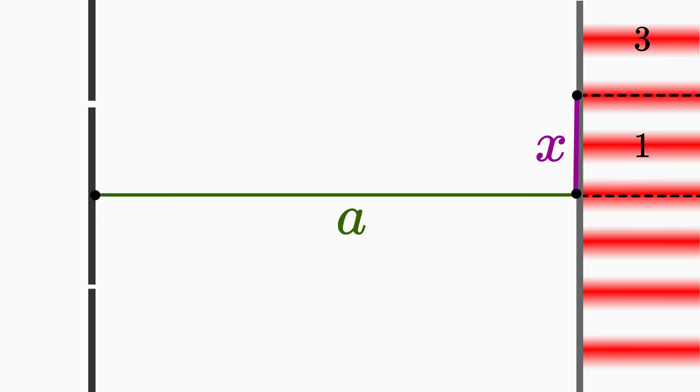Because only exactly in the middle of the bright fringe the condition for constructive interference is fulfilled. The same applies to dark fringes. Always measure from the middle.